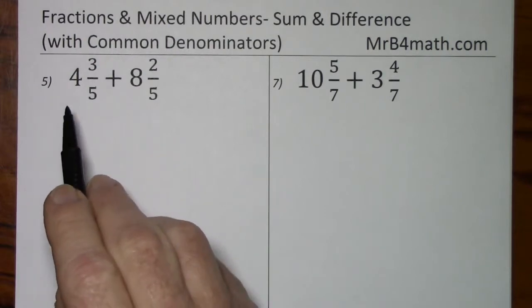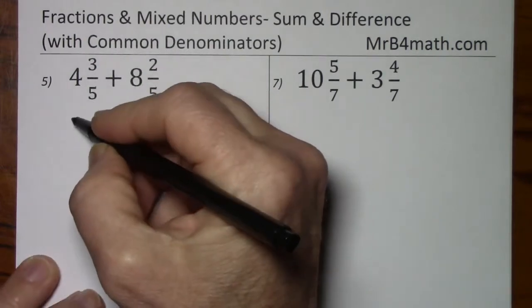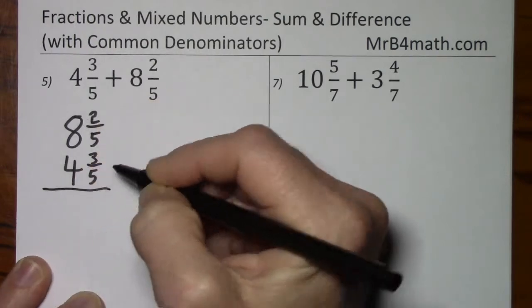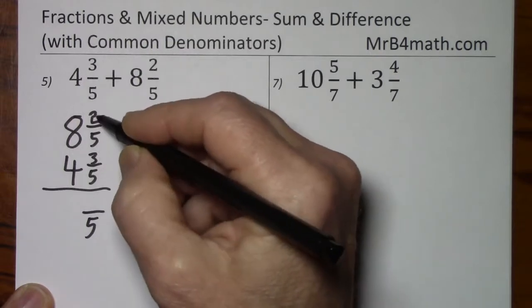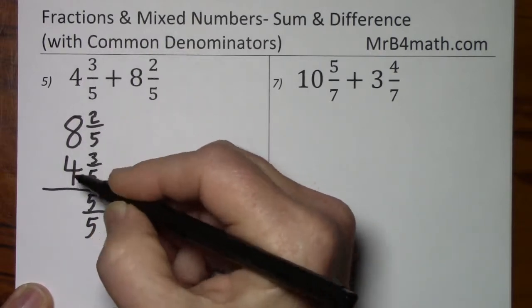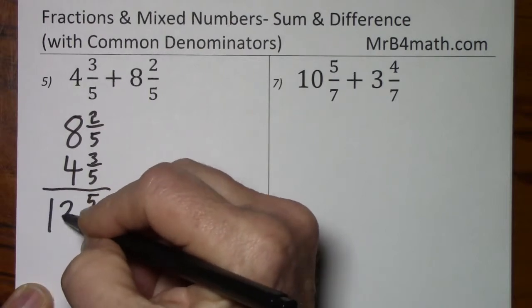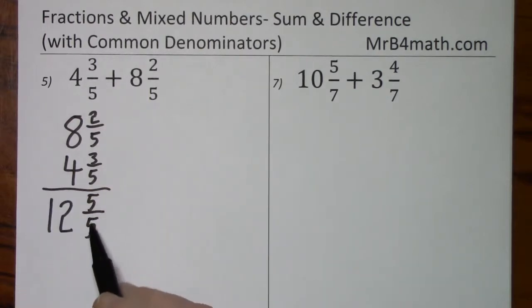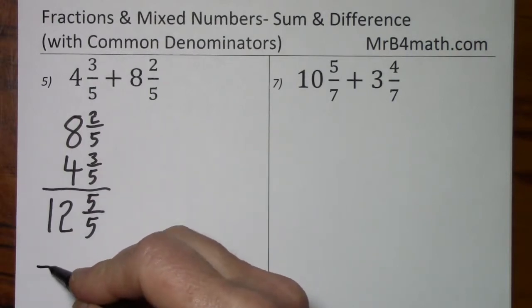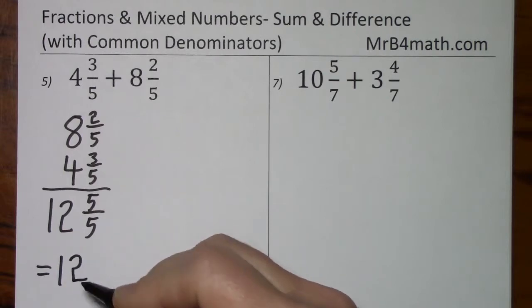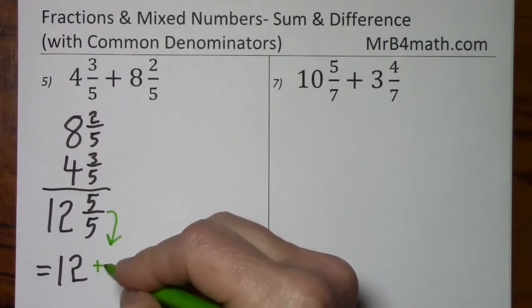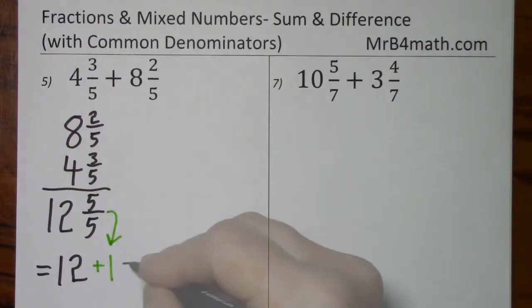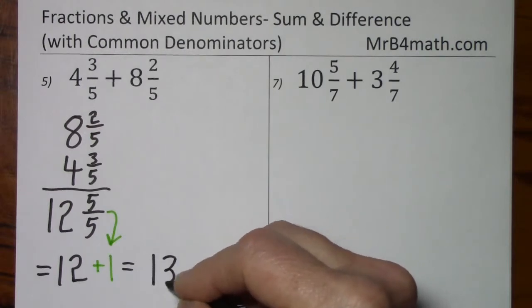Looking at number 5, the signs are the same. We will be adding. We keep our common denominator. We add the numerators. 8 and 4 gives us 12. But we can't leave it in this form because 5 fifths is equivalent to a 1. So what we have is 12, and this 5 fifths means we have plus 1. So the final answer is 13.